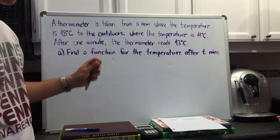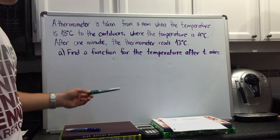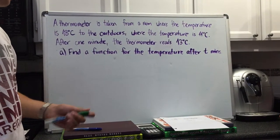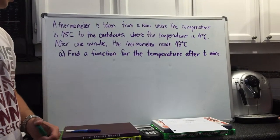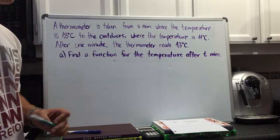So we're doing a question from the test, one of the word problems. A thermometer is taken from a room where the temperature is 18 degrees Celsius to the outdoors where the temperature is 11 degrees. After one minute, the thermometer reads 13 degrees. Find a function for the temperature after t minutes.